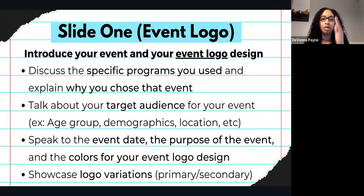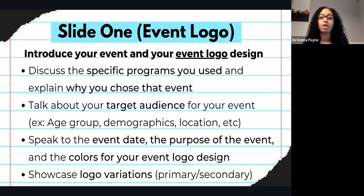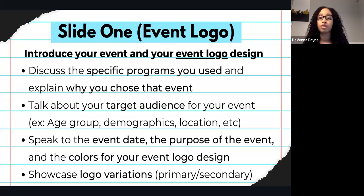Presentation outline. You'll have a couple of slides, and I've provided you with some ideas to incorporate within your slides. Slide one is about your introduction to your event and your event logo design. You can discuss the specific programs you used, explain why you chose that event, talk about your target audience including age group, demographics, and location. Speak to the event date, the purpose of the event, and the colors for your event logo design. Also showcase your logo variations — primary logo, secondary logo, and so on.